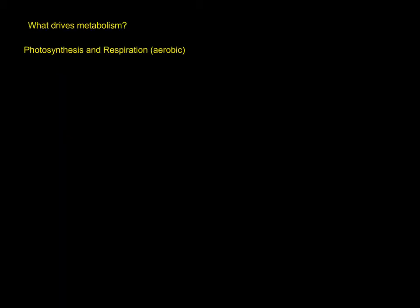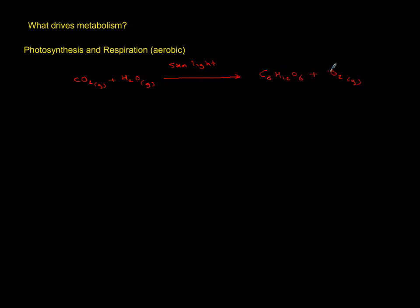To talk about where metabolism and life come from, we need to discuss producers and consumers. Photosynthesis is when plants take carbon dioxide from the air, moisture from the air, and use red light from sunlight. Plants are green because red light is absorbed and the complementary green is reflected, producing glucose and oxygen. Since photosynthesis uses energy to produce a larger molecule, it is an example of an anabolic process.